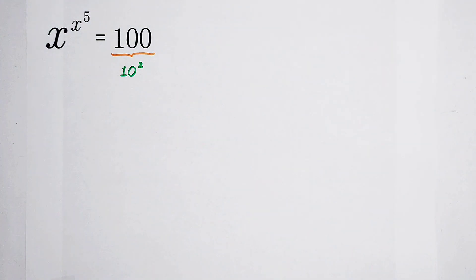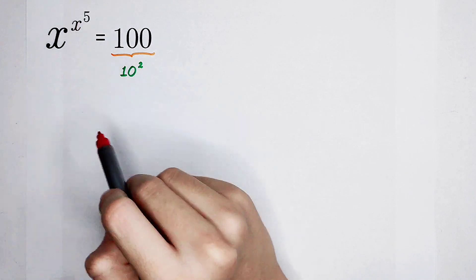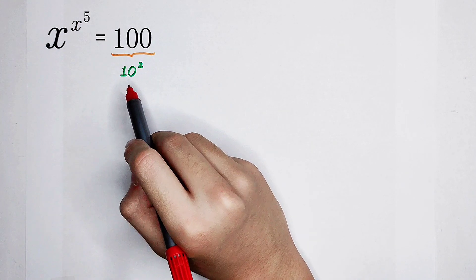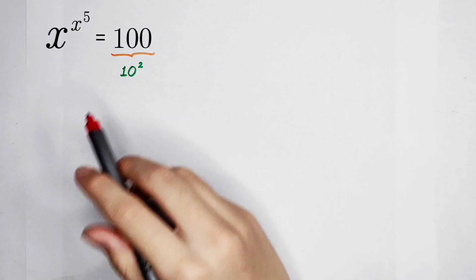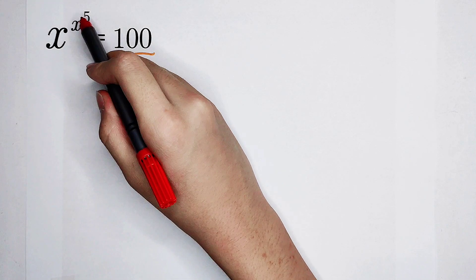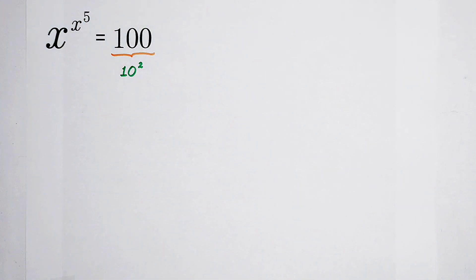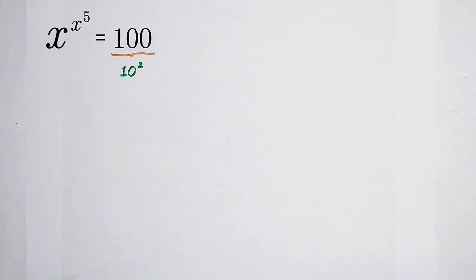The left-hand side is x to the power of x to the power of 5, and the right-hand side is just 10 squared. I have a question: what is the relationship between 2, 5, and 10? Of course, it is very easy — 2 times 5 is 10. That means I'm going to multiply by 5 on this exponent of the right-hand side.